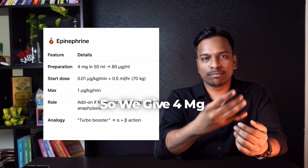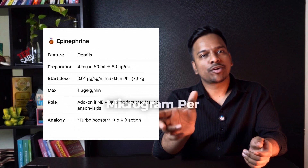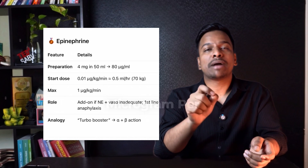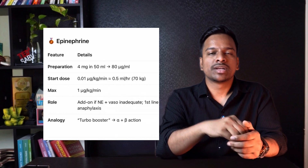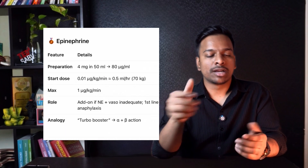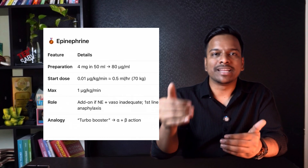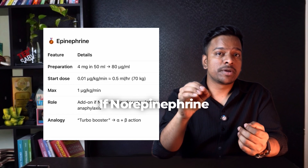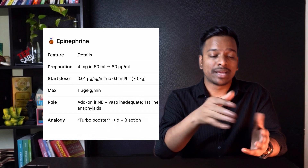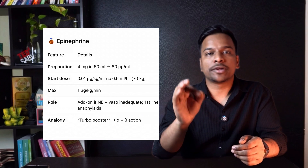Now coming to epinephrine — this is the second line or add-on agent. We give 4 mg of epinephrine in 50 ml NS, which again becomes 80 micrograms per ml, and the starting dose is 0.01 micrograms per kg per minute, that becomes 0.5 ml per hour as a starting dose for a 70 kg adult. Maximum we can give is 1 microgram per kg per minute. It is very useful if norepinephrine plus vasopressin is not enough, especially in patients of anaphylaxis, and for patients of refractory septic shock.